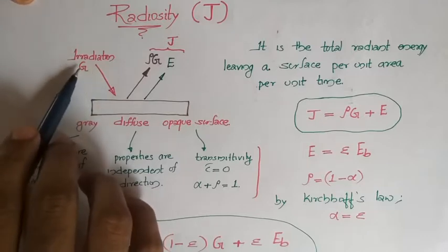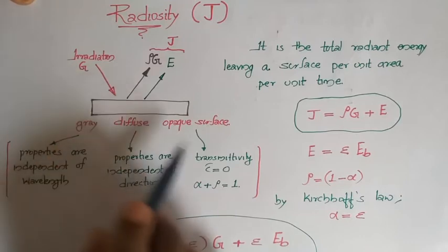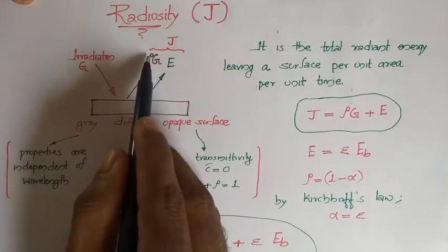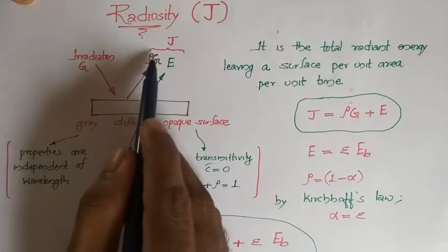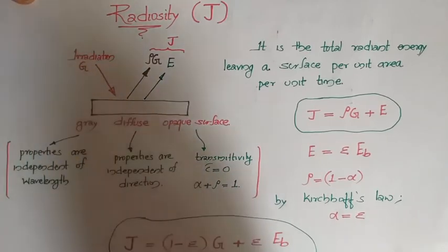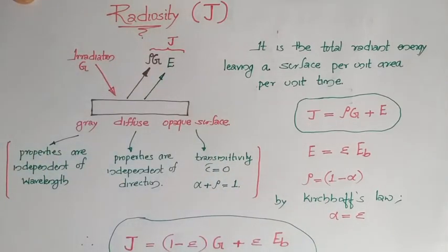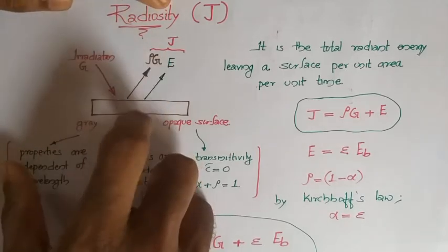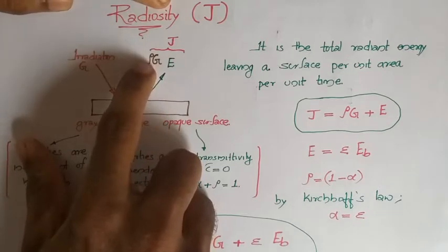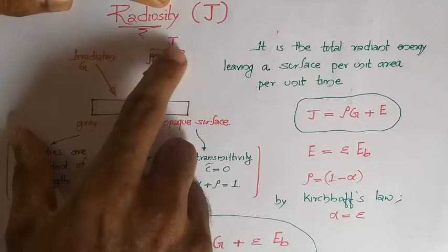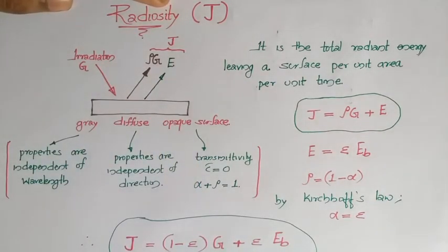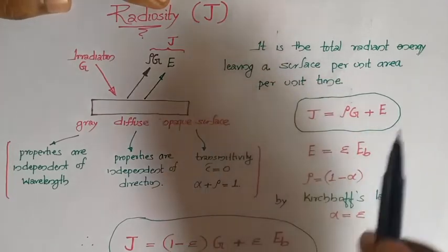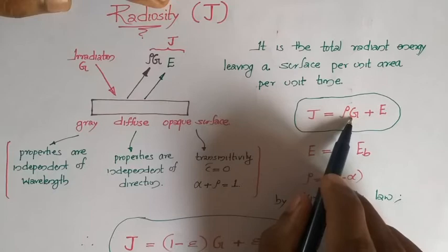The incident energy per unit area is known as irradiation, represented by capital G. Since nothing is transmitted, the incident energy is either absorbed or reflected. If reflectivity is represented by rho, the reflected energy equals rho times G. This surface is also at some temperature, so it will radiate energy. The emitted energy for a real body is represented by E. The total energy coming out — emitted energy E plus the reflected irradiation rho times G — is known as radiosity, defined as the total radiant energy leaving a surface per unit area per unit time. So J equals rho times G plus E.